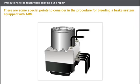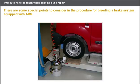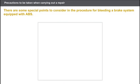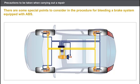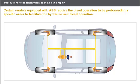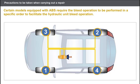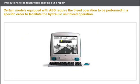An operation on the ABS unit may require opening of the hydraulic circuit, so it is necessary to bleed the brake circuit once the operation is completed. There are some special points to consider in the procedure for bleeding a brake system equipped with ABS. In addition to the usual bleed operation, there is an additional bleed operation for the hydraulic unit and its various circuits. The bleed operation for a conventional braking system without ABS consists of bleeding in the following order: the rear right-hand wheel, the front left-hand wheel, the rear left-hand wheel, and the front right-hand wheel. Certain models equipped with ABS require the bleed operation to be performed in a specific order to facilitate the hydraulic unit bleed operation. Please consult the technical documentation for details of the correct bleed procedure and the special tooling required.